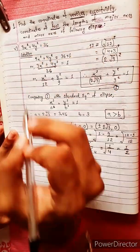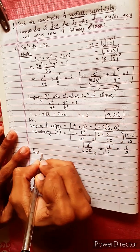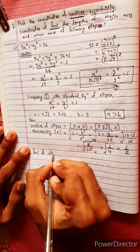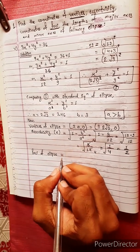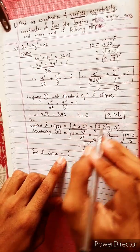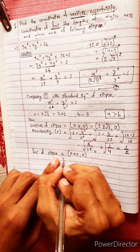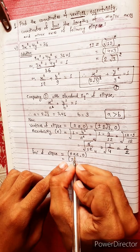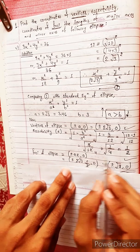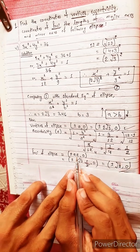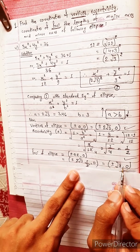Eccentricity of ellipse is e equals c/a, valid when a is greater than b. Here e equals 1/2. The foci of the ellipse are at (±c, 0) equals (±√3, 0).